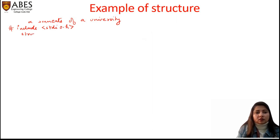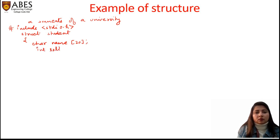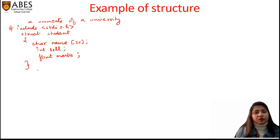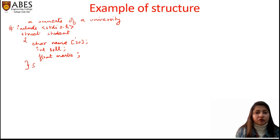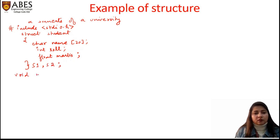First we have to design the structure: struct, then a valid identifier — let's say student. I want to store the name, roll number, and marks in a subject. If the information was for one student I'd take a single variable s, but since I want to store information for two students, I need two structure variables. So I declare s1 and s2, then start with the main function.